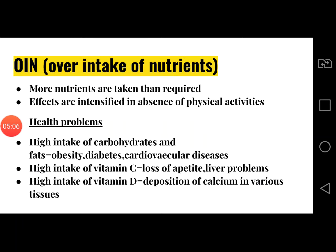The third category is over intake of nutrients. If we take more nutrients than required by our body, it results in over intake of nutrients, and the effects are intensified in the absence of physical activities. High intake of carbohydrates and fats leads to obesity, diabetes, and cardiovascular diseases. High intake of vitamin C results in loss of appetite and liver problems, and high intake of vitamin D results in deposition of calcium in various tissues.